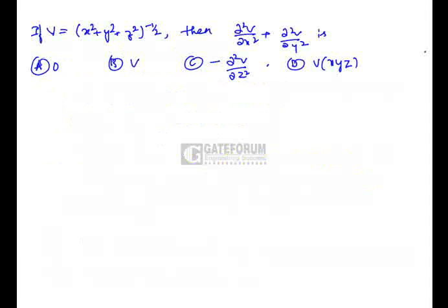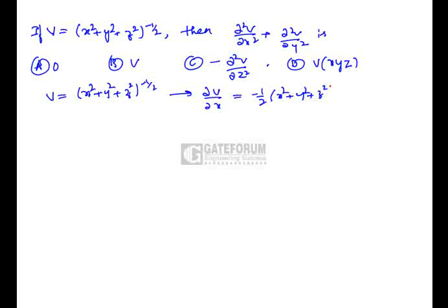V is a function given as (x² + y² + z²)^(−1/2). We have to find ∂²V/∂x² + ∂²V/∂y². Differentiating partially with respect to x: ∂V/∂x = (−1/2)(x² + y² + z²)^(−3/2) · 2x, which simplifies to −x(x² + y² + z²)^(−3/2).